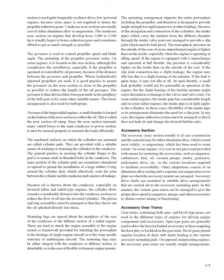The accessory rear section is usually of cast construction — either aluminum alloy or magnesium. On some engines it is cast in one piece and provided with means for mounting accessories such as magnetos, carburetors, fuel pumps, oil pumps, vacuum pumps, starter, generator, tachometer drive, etc. Other adaptations consist of an aluminum alloy casting with a separate cast magnesium cover plate on which accessory mounts are arranged. Accessory drive shafts are carried out to the accessory mounting pads, allowing various gear ratios to give the proper drive speed to magnetos, pumps, and other accessories for correct timing or functioning.